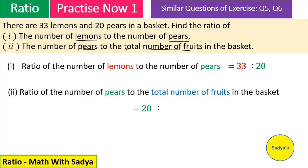So, 33 plus 20. 20 as it is, ratio as it is. 33 plus 20 is 53. Ab 20 aur 53 donon kisi table mein nahin aate. They do not have a common factor. So, this is the simplest form and this is the answer.